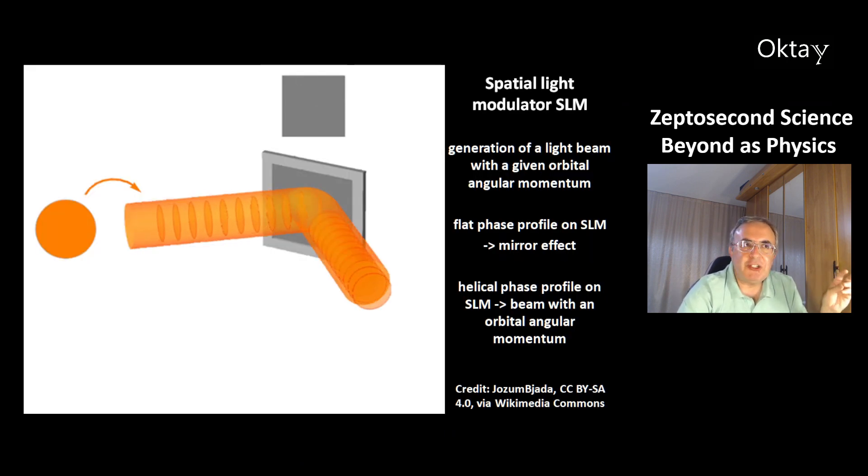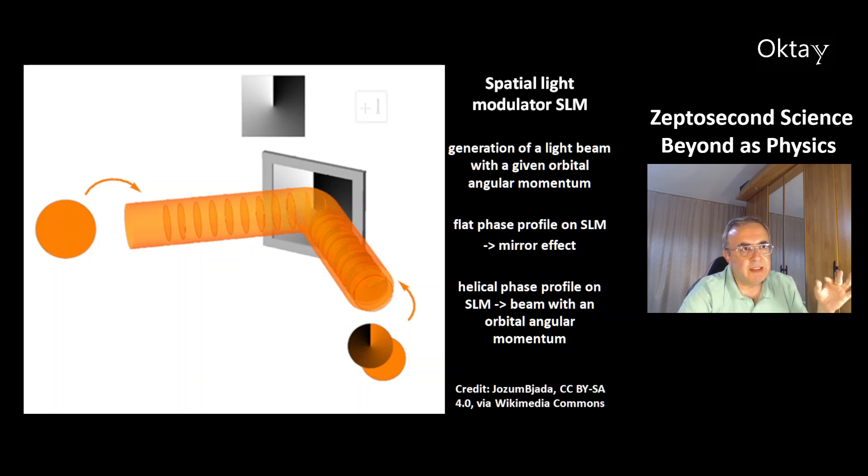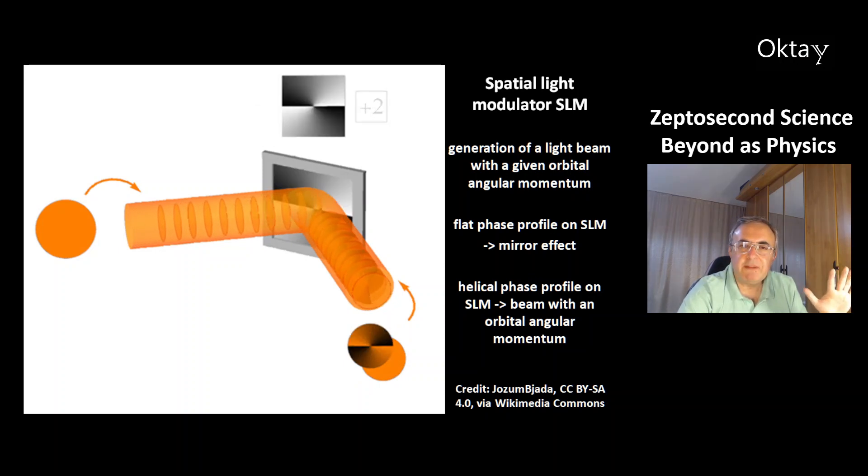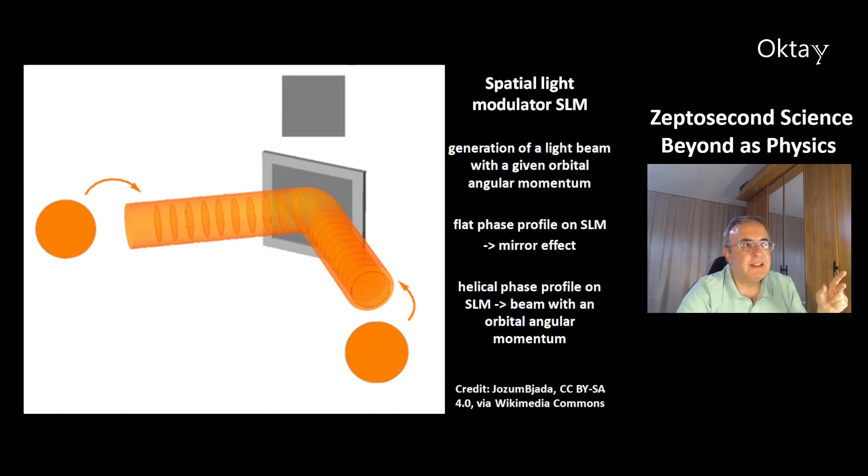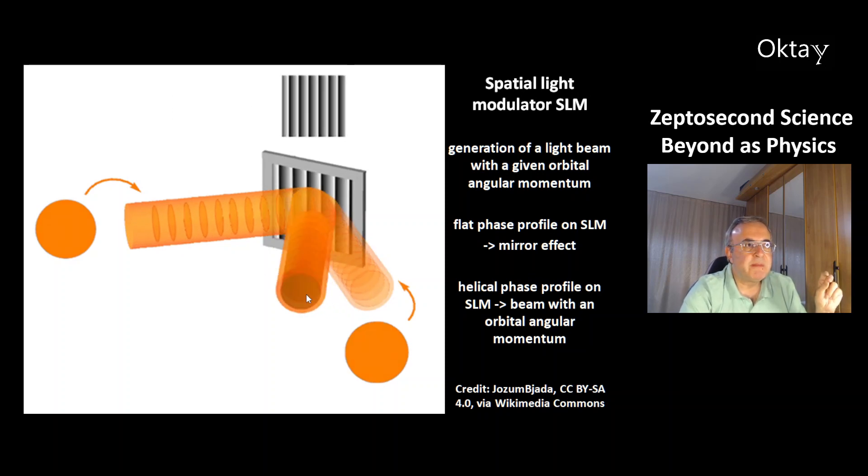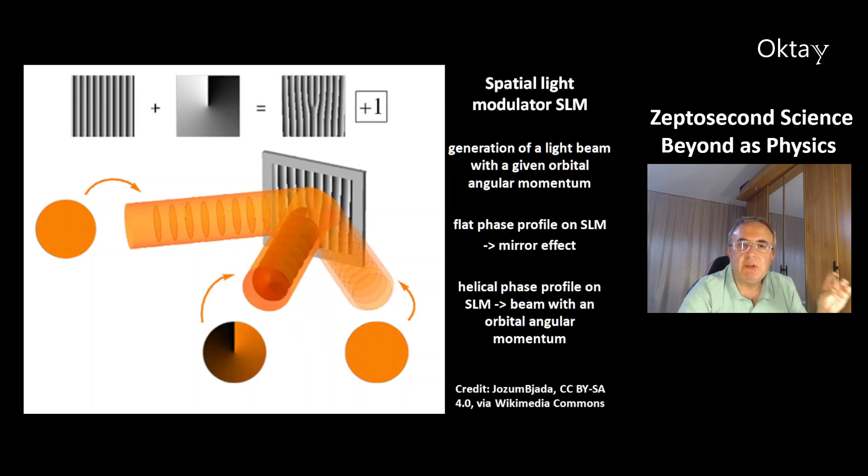This is an SLM spatial light modulator. It's used for the generation of a light beam with a given orbital angular momentum. If the modulator has a flat phase profile, then you get a mirror effect. And with a helical phase profile, on the spatial light modulator you will get a beam with an orbital angular momentum.